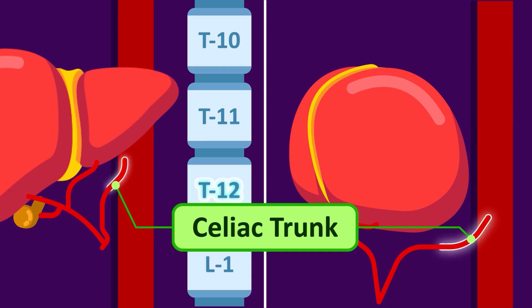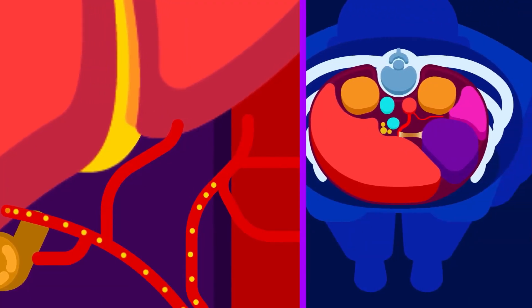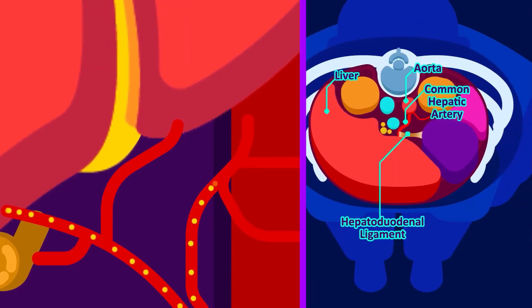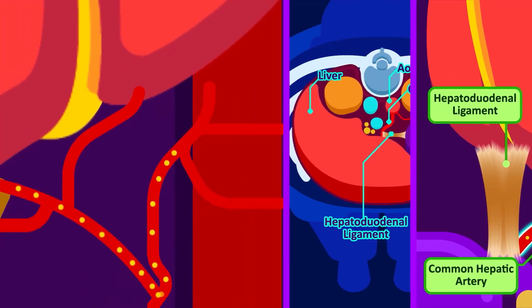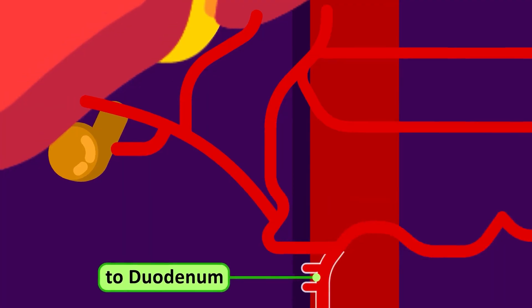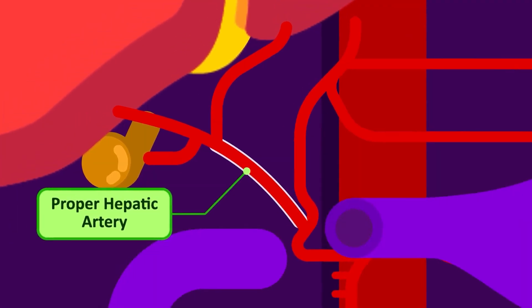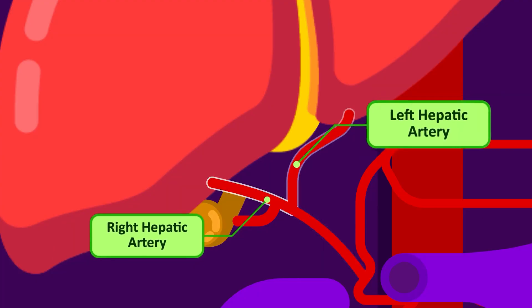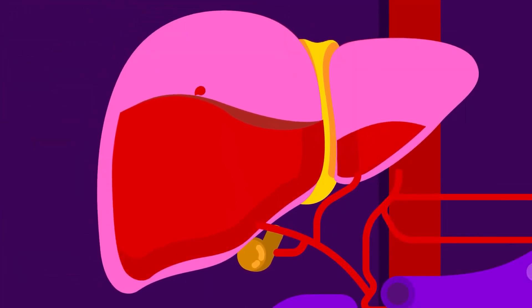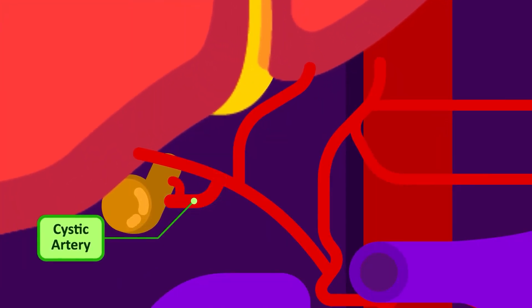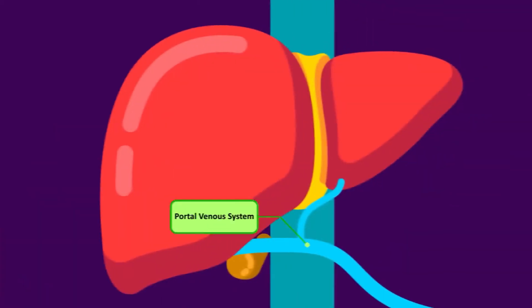The hepatic artery contributes about 30 percent of the entire hepatic blood supply. The celiac trunk, arising at the level of T12 from the abdominal aorta, gives rise to three arteries: the left gastric artery, the splenic artery, and the common hepatic artery. The common hepatic artery travels retroperitoneally towards the right in the hepatoduodenal ligament, then divides into the gastroduodenal artery — which supplies the stomach and duodenum — and the proper hepatic artery, which supplies the liver. The proper hepatic artery branches into the right and left hepatic arteries supplying the liver's respective lobes.